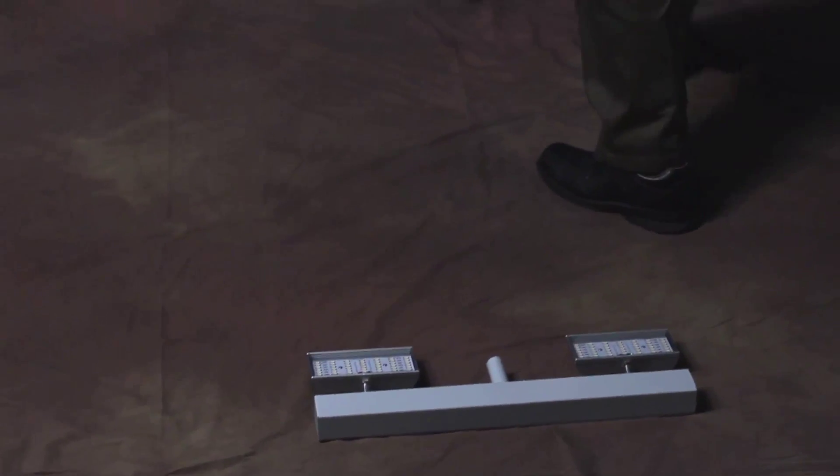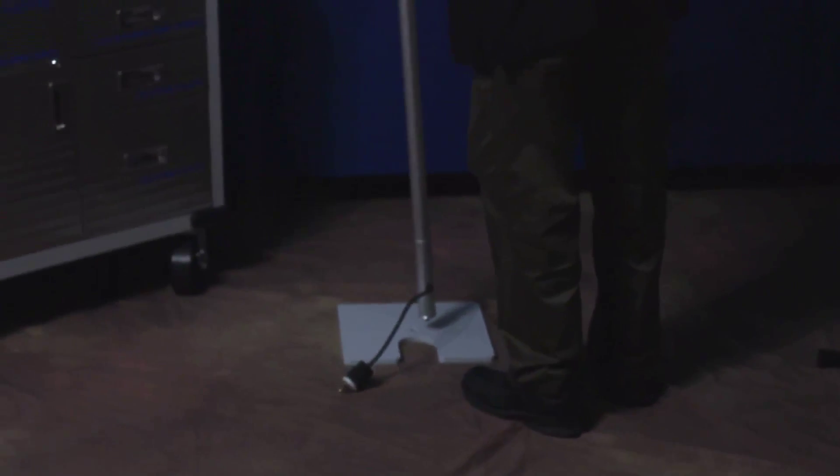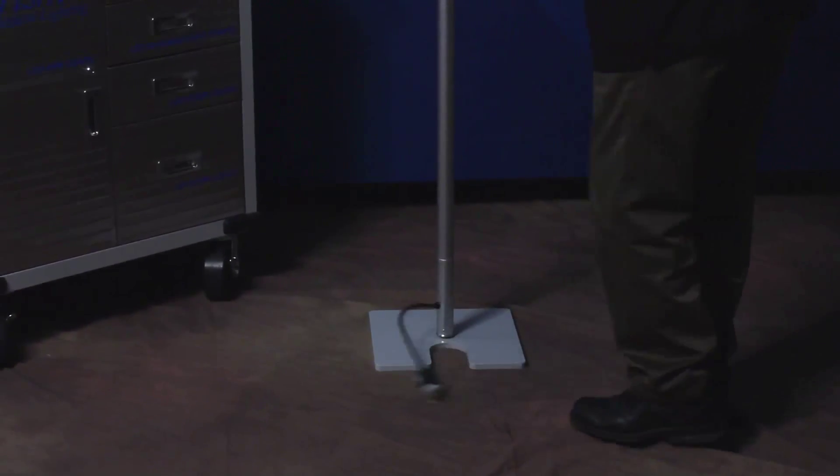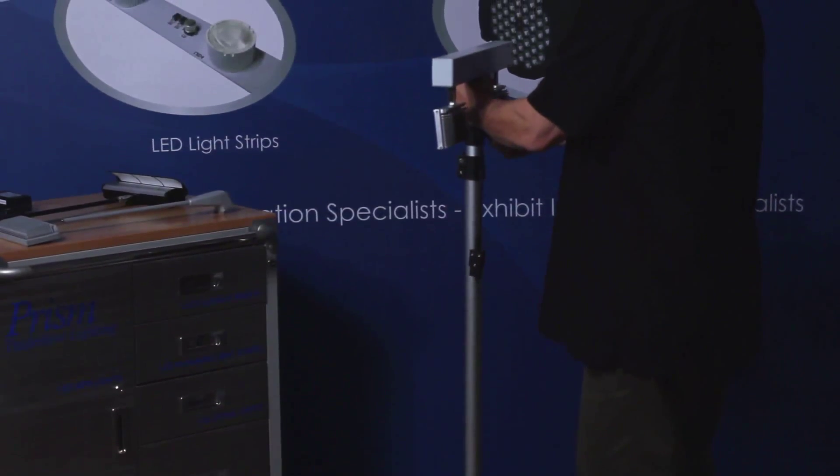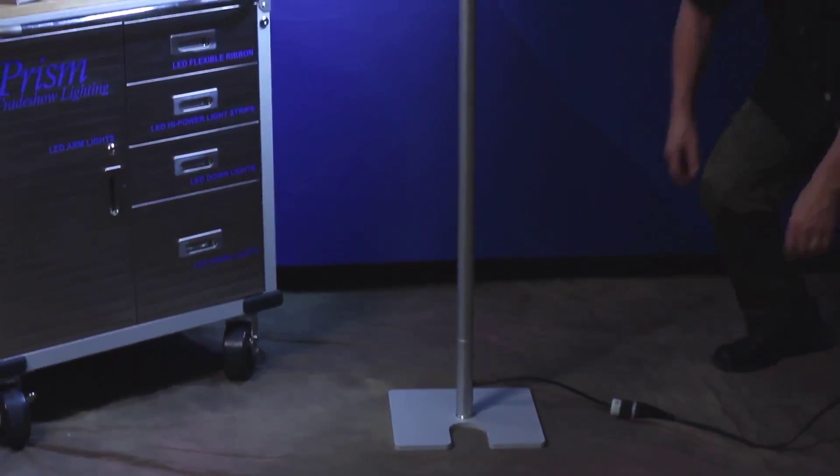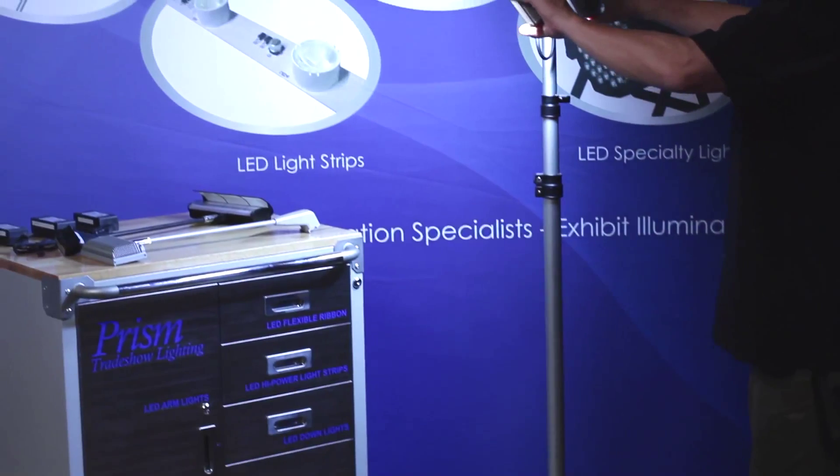Setup is as easy as 1-2-3. Simply thread pole into the base, slide light bar on top, adjust the pole, and plug in the cord. Stand back and watch your exhibit come to life.